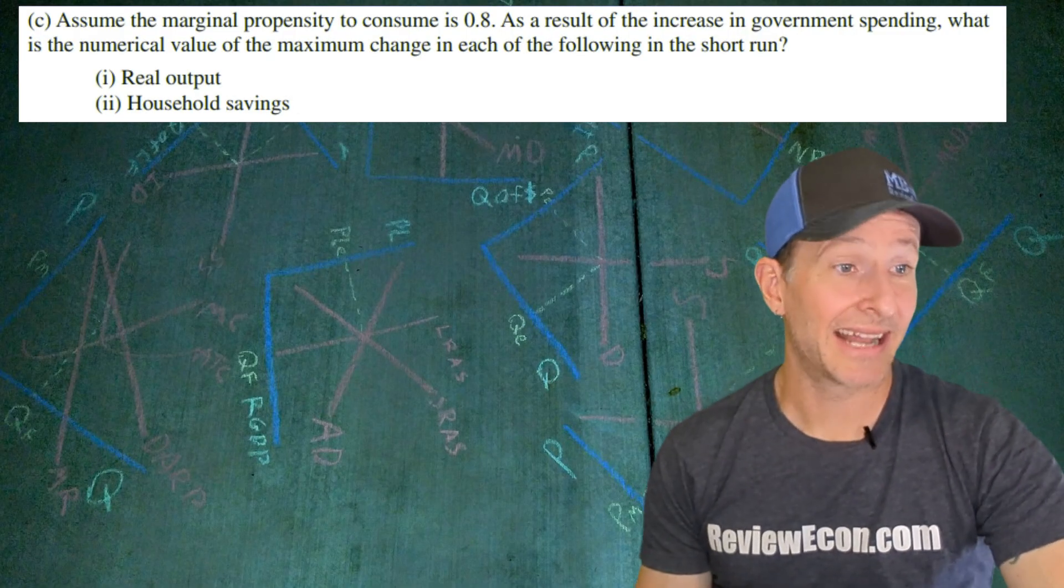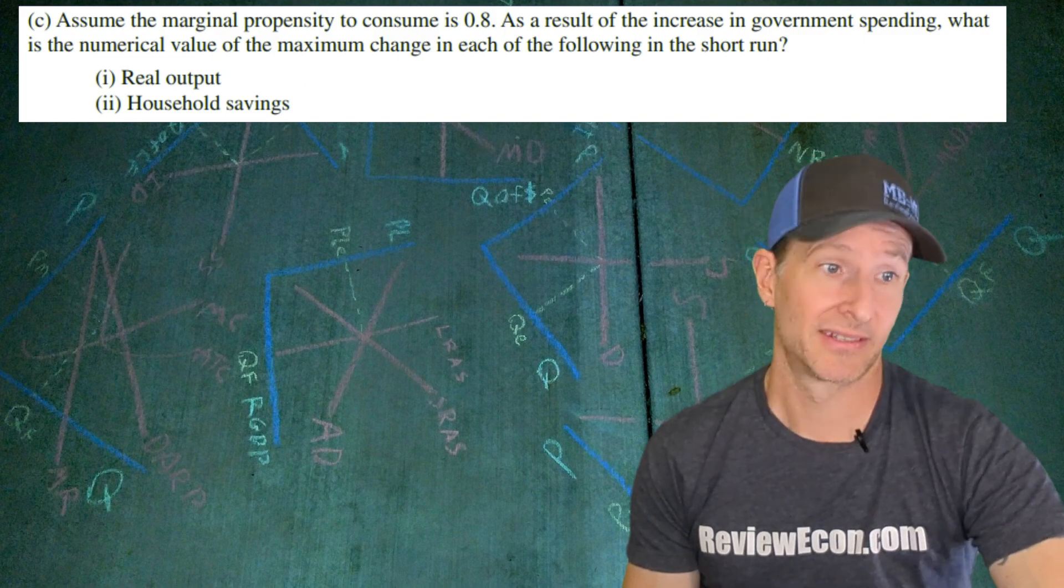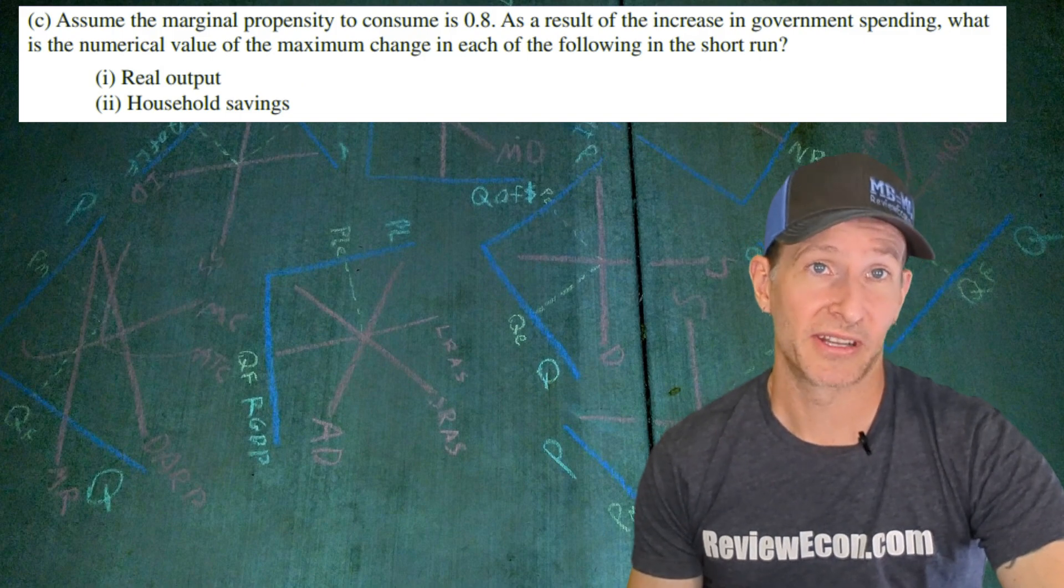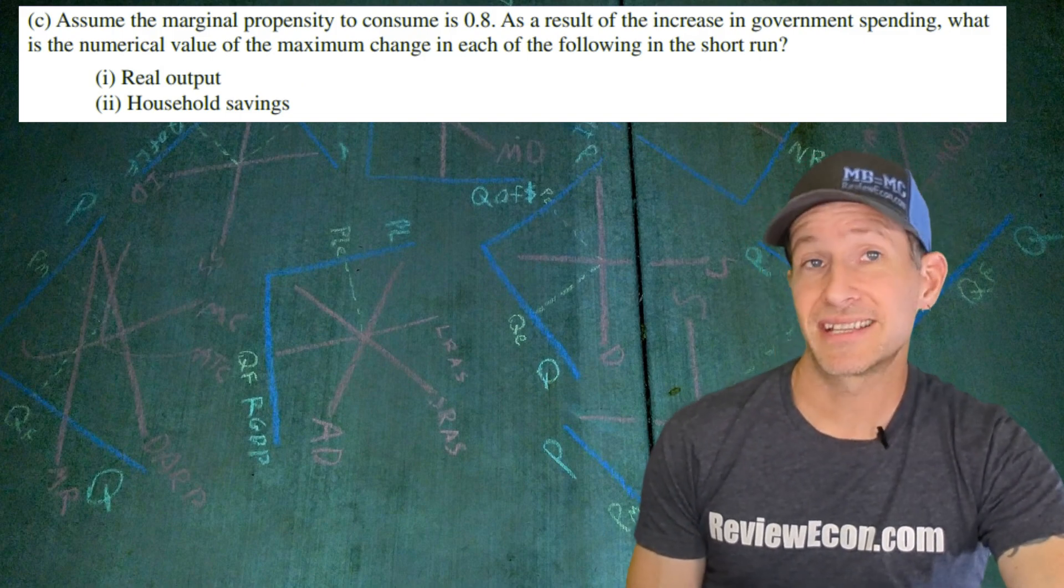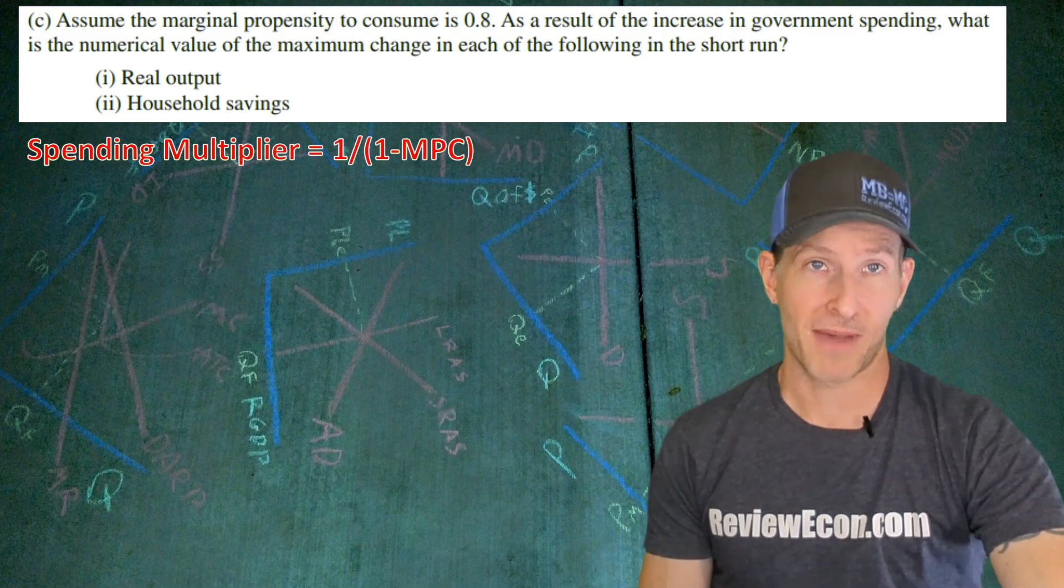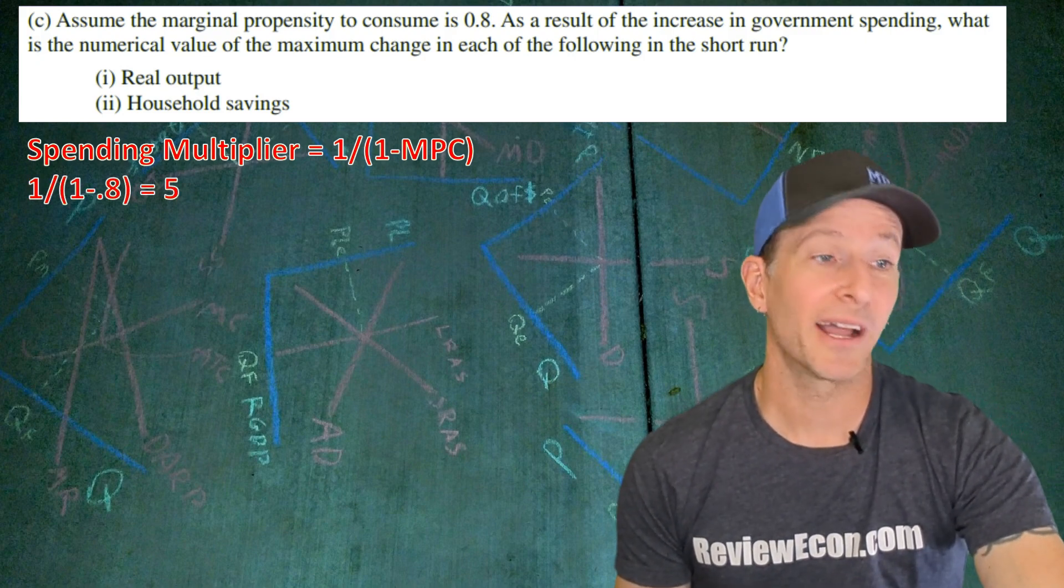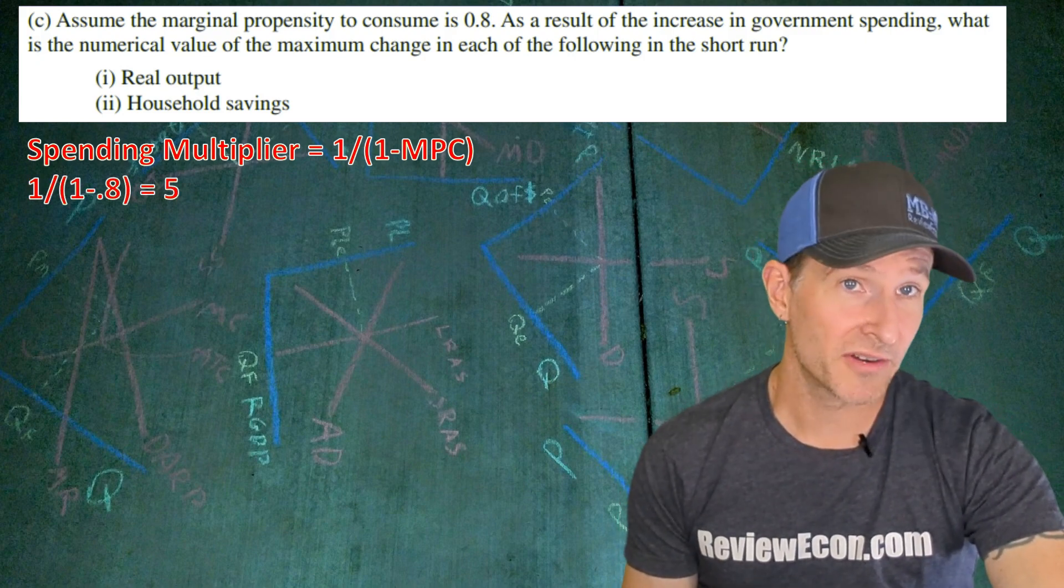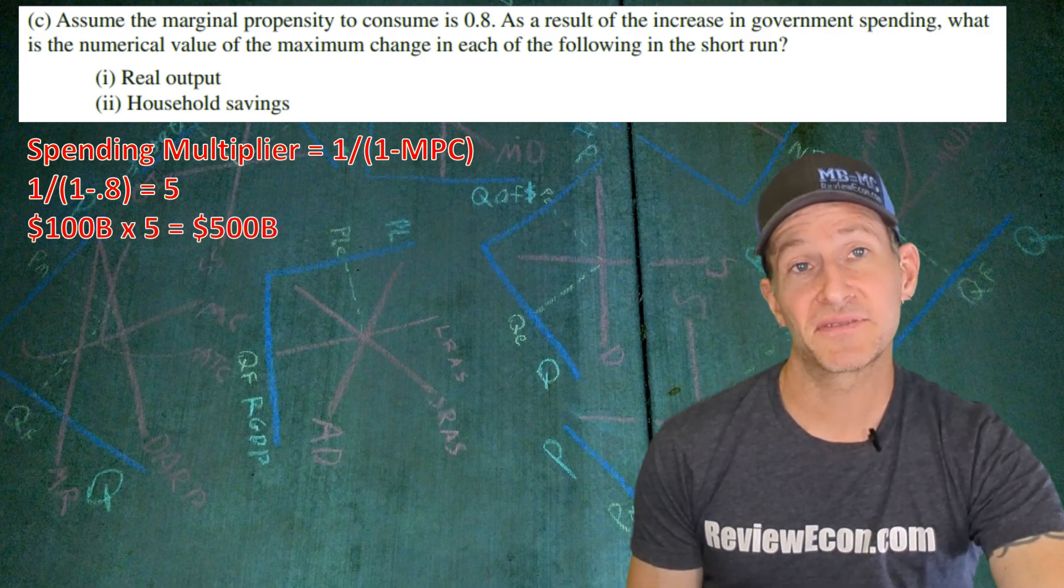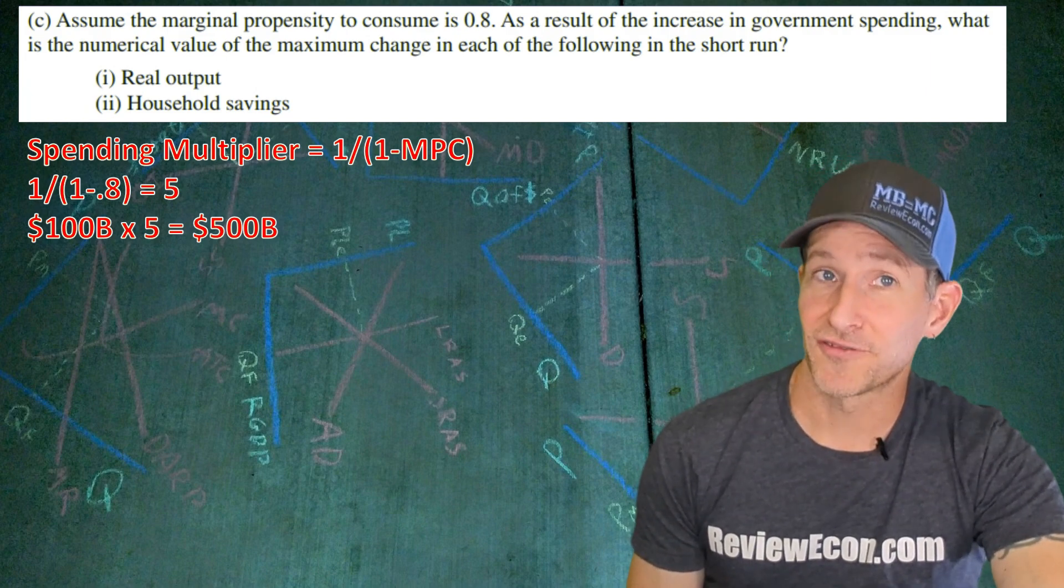For part C, we're going to assume that the marginal propensity to consume in the United States is 0.8. We have to say how much real output and household savings will change as a result of the 100 billion dollar increase in government spending. We have to remember that the spending multiplier is 1 divided by 1 minus the MPC. When we plug in the numbers it tells us that the spending multiplier is 5. That original 100 billion dollar increase times that 5 spending multiplier gives us a maximum change in real GDP of 500 billion dollars.